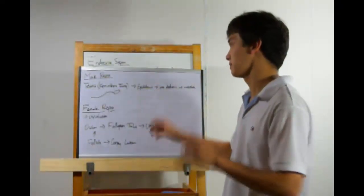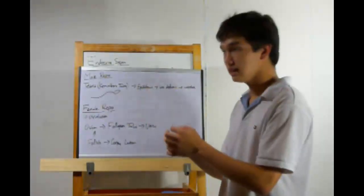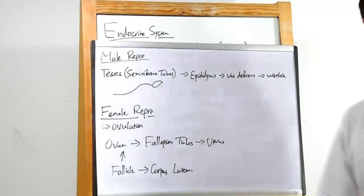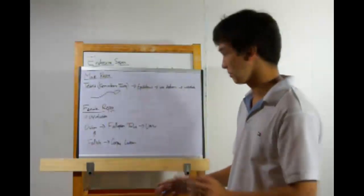Okay, in the male reproductive system, testes are the main organs. These are actually composed of a bunch of tubes wound up over and over again. Seminiferous tubes. This is where sperm is created. Sperm then move on to the epididymis. This is where they mature.